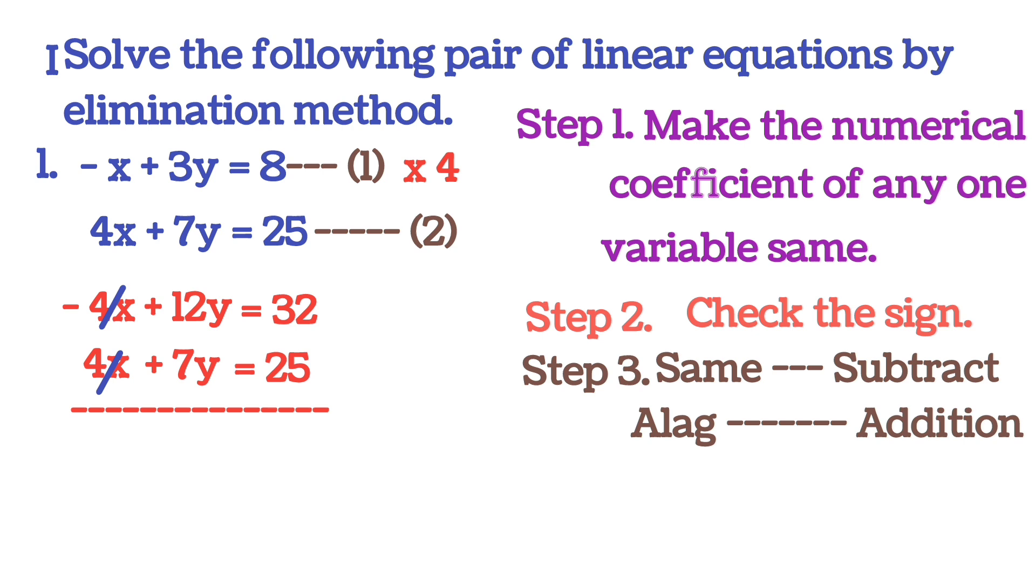Now we are doing addition, so we will do 12 + 7, that is 19y equals to 32 + 25, 5 + 2 is 7, 3 + 2 is 5, so we will get 57.